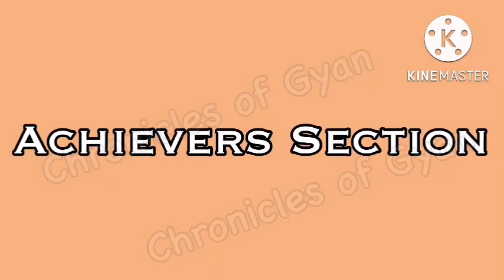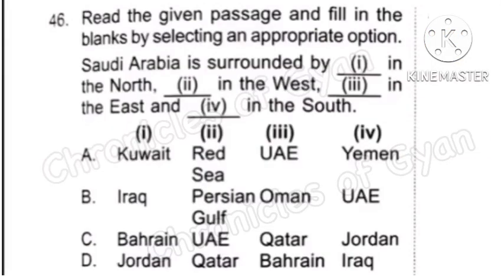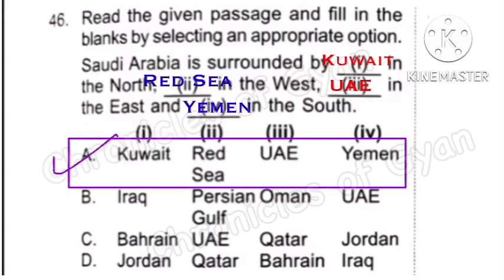The second and last section is the Achievers section and each question carries 3 marks. Question 46: Read the given passage and fill in the blanks by selecting an appropriate option. Saudi Arabia is surrounded by 1 in the North, 2 in the West, 3 in the East and 4 in the South. The correct answer is Option A.